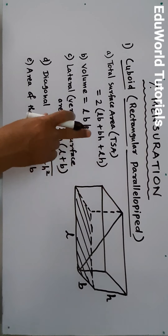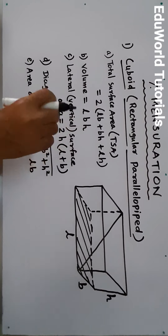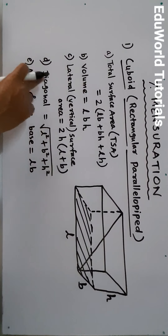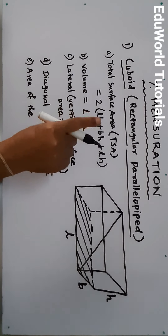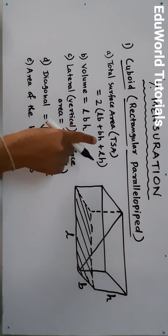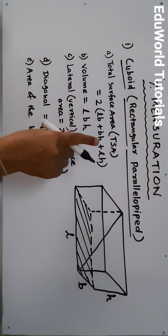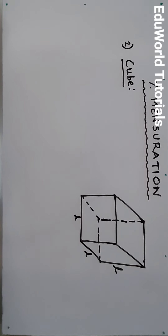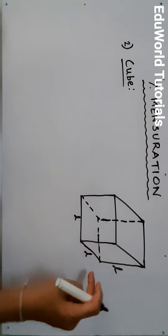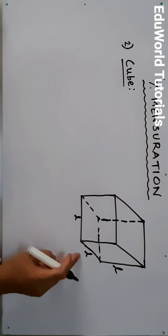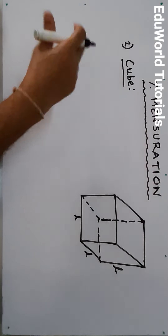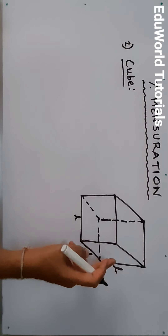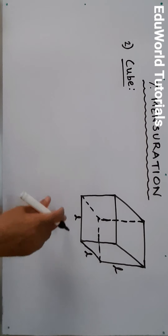The entire chapter is based on the formula, so remembering the formula is the most important job. You have to draw the figure in your notebook and write all the formulas. The second figure is cube — you can see all the sides in a cube are the same: L, L, L. The only difference between cube and cuboid is that in the cuboid all three dimensions are different, whereas in a cube all are the same.